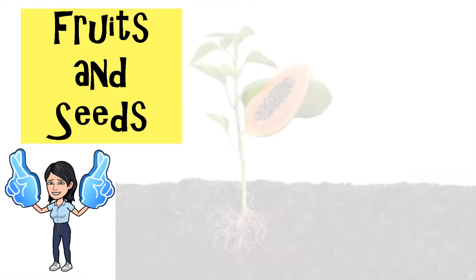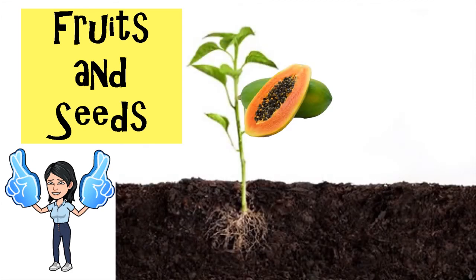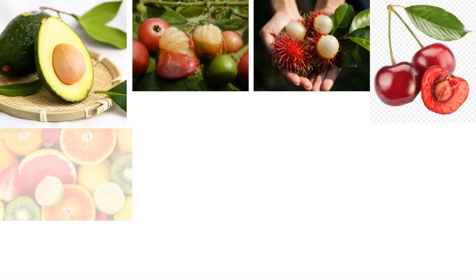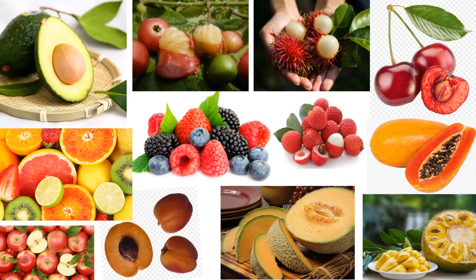Most plants have fruits and seeds. Can you identify where the fruits are? Where are the seeds? What are the functions of the fruits and seeds? Fruits are the parts of a plant that contain the seeds. The fruits protect the seeds. The seeds will grow into a new plant. We can eat the fruits of some plants. There are many tasty fruits. They are rich in vitamins and minerals. What are some of the local tasty fruits that you like?